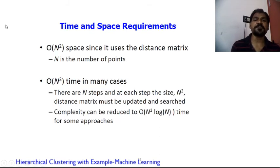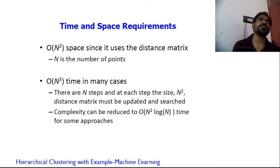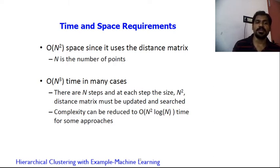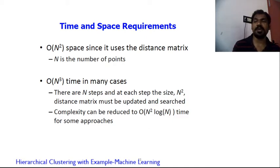Regarding time and space requirements: space is O(n²) since it uses an n×n distance matrix. Time complexity is O(n³) — there are n steps and at each step the n² distance matrix must be updated and searched. For some approaches, this can be reduced to O(n² log n) time, but it is O(n³) in many cases.